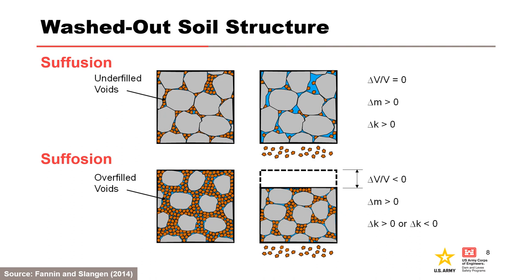The two processes are distinguished by the washed-out soil structure that remains. For suffusion, the voids are under-filled such that the volume of finer particles fits within the voids formed by the coarser particles. Therefore, effective stresses do not load the finer particles; the seepage-induced mass loss results in little or no change in volume and an increase in hydraulic conductivity, so the soil structure remains intact. For suffosion, the voids are overfilled such that the coarser particles float within the finer particles, and effective stresses load the finer particles. The seepage-induced mass loss results in a reduction in volume and a change in hydraulic conductivity, so there is some form of destruction or collapse of the soil structure that accompanies the migration of fine particles.